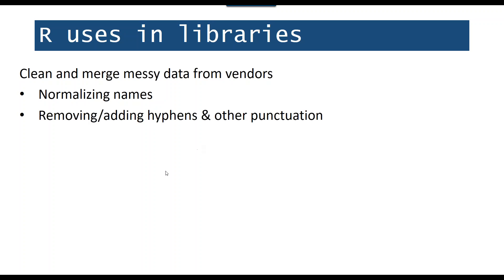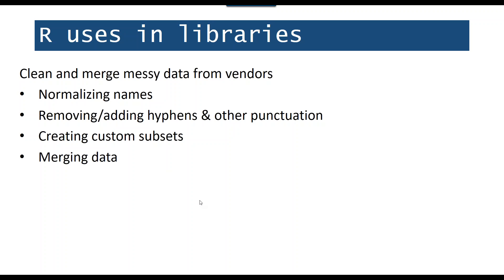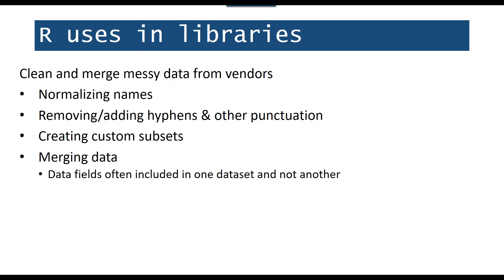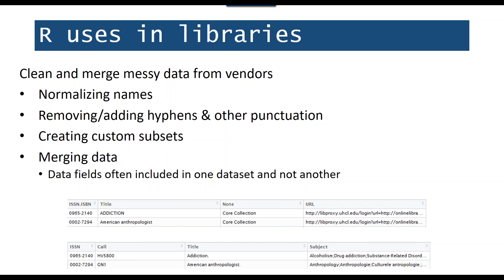Data from vendors can also be messy. When we want to merge data — say, seeing how many print books versus ebooks we have, or merging databases — you often have to merge by a name field, and names are not normalized: there might be an ampersand, lowercase, or uppercase differences. You can use R to clean up names, and also to remove and add hyphens in ISSNs or ISBNs. You can create very custom, dynamic subsets — for example, only ebooks that are DDA-triggered in the field of geography with over 15 user sessions. You can also merge data between vendors or within vendors, and I find R much easier than Access for doing merges.